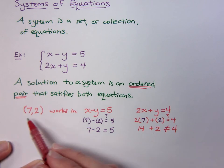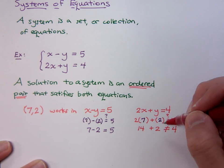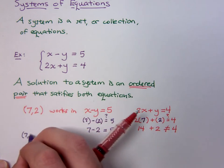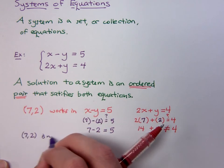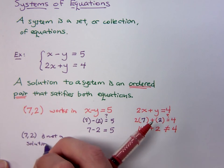So what we know is that although (7, 2) works in one equation, it doesn't work in the other one. So (7, 2) is not a solution. We know that the ordered pair (7, 2) is not a solution to the system.